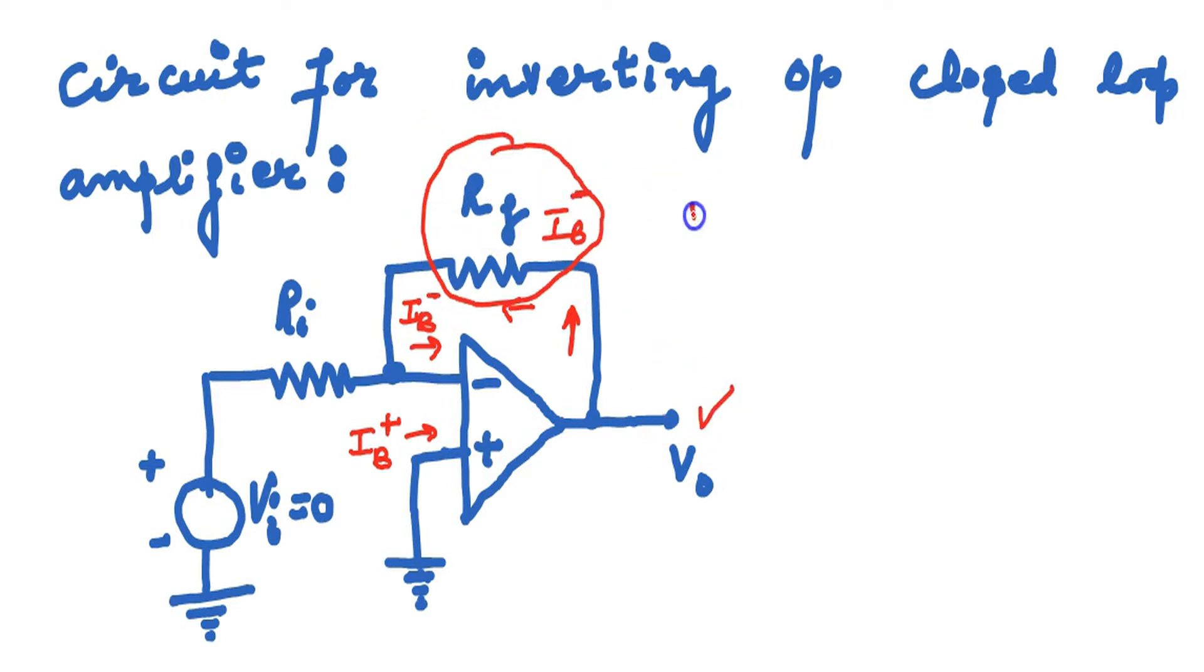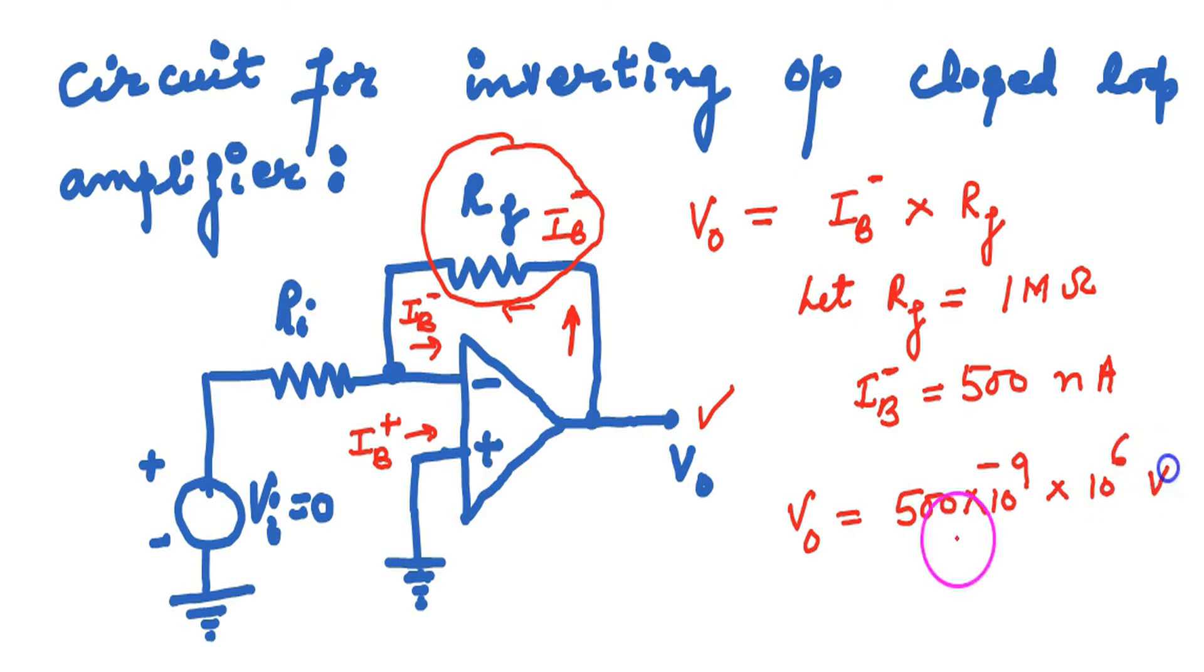Let the voltage by Ohm's law across RF be IB minus into RF. Let RF is 1 megaohm and IB minus is 500 nanoamperes. Then output voltage becomes by Ohm's law 500 millivolts.